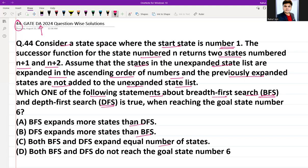We cannot say option D with proof, we can ignore it. And BFS expands more states or DFS expands more states than BFS, they are also incorrect statements. As the question itself said that the successor function for state number n returns two states n+1 and n+2, that is why both BFS and DFS expand equal number of states in order to search whatever goal state we are having.